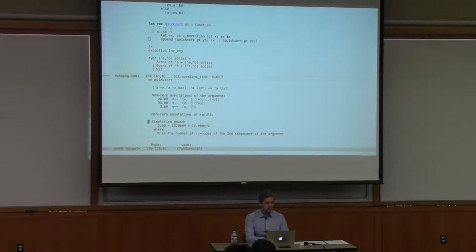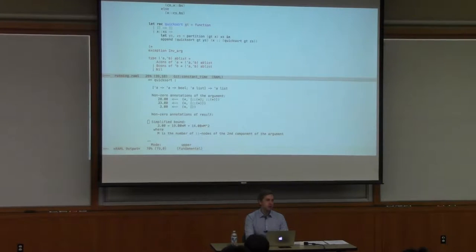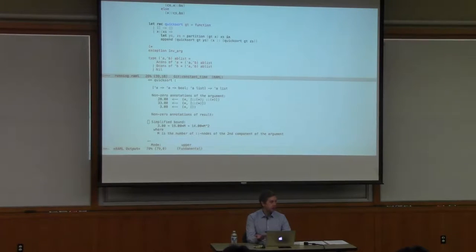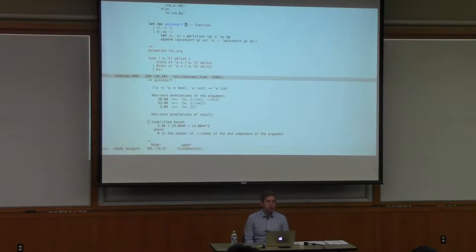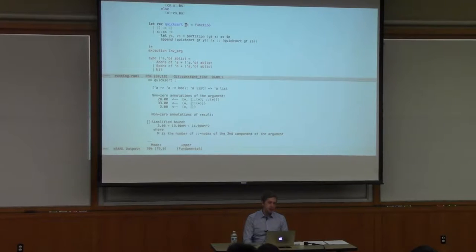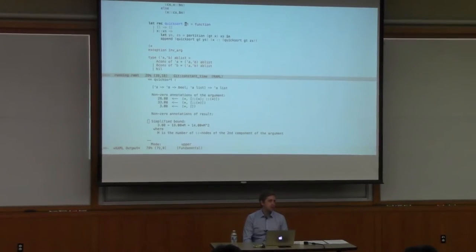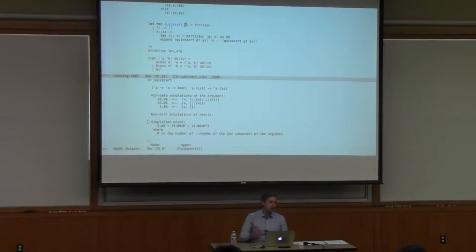Running the analysis for number of evaluation steps is pretty fast, and you get a quadratic bound as you'd expect. One interesting thing is that we don't know what the comparison function will be—if you sort a list of strings it might be linear, or even worse. One way to deal with that would be a parametric bound. But what we do here is assume the cost of the comparison is zero and give you the cost of the rest of the quicksort. If you use quicksort with a concrete comparison later, you get the bound with respect to that functional argument.